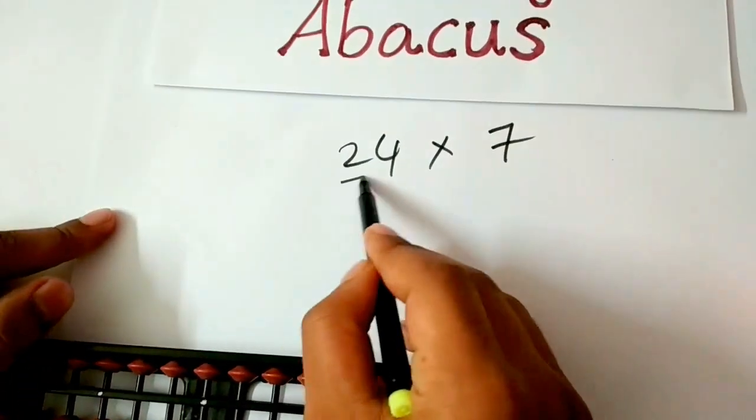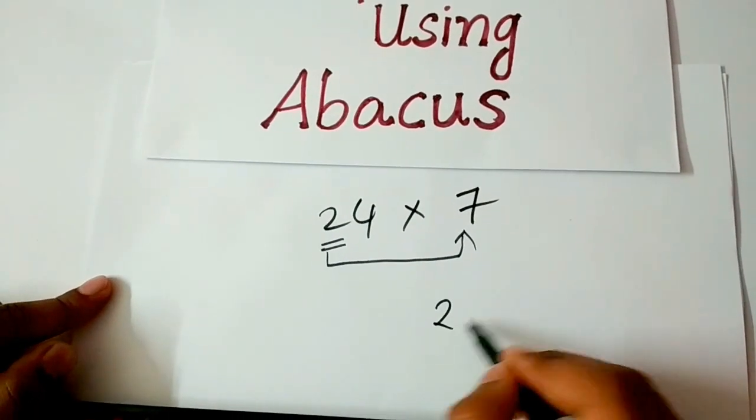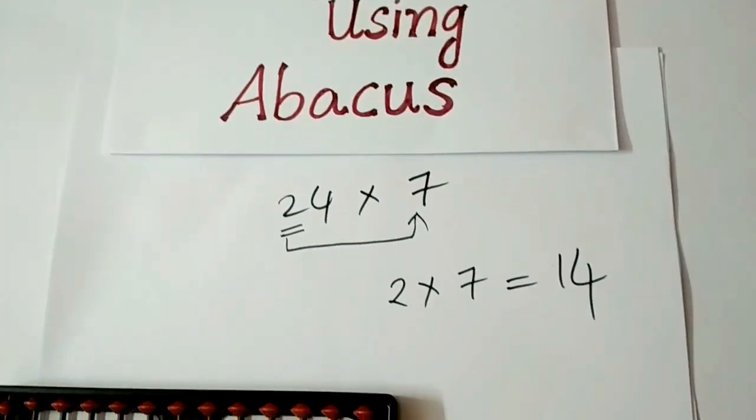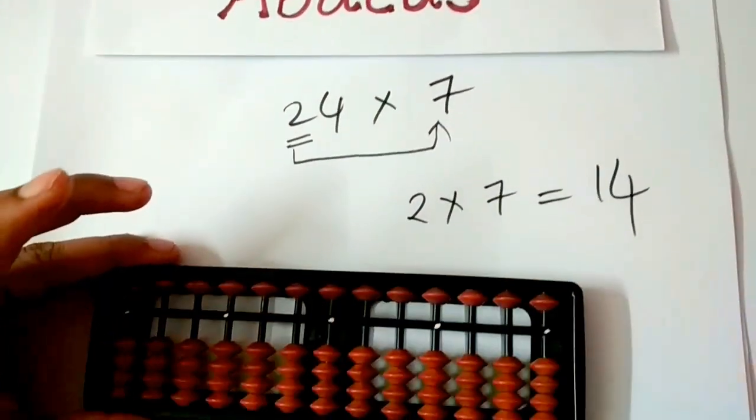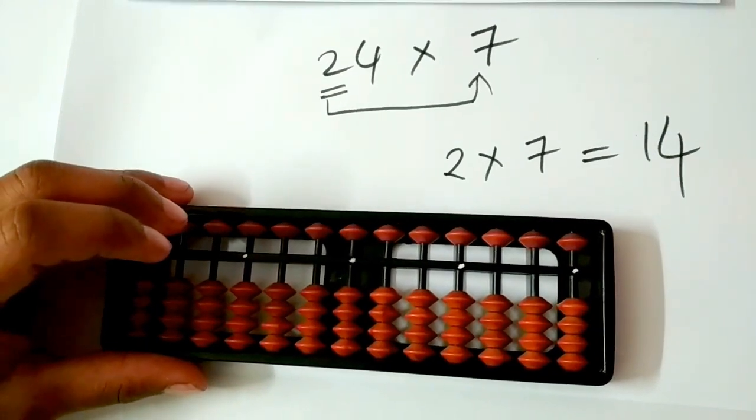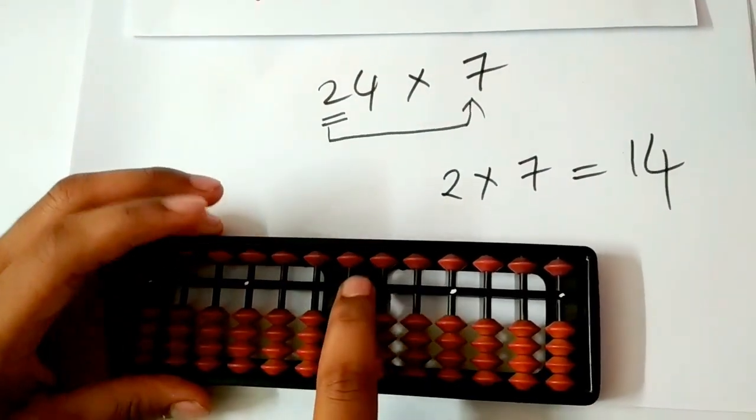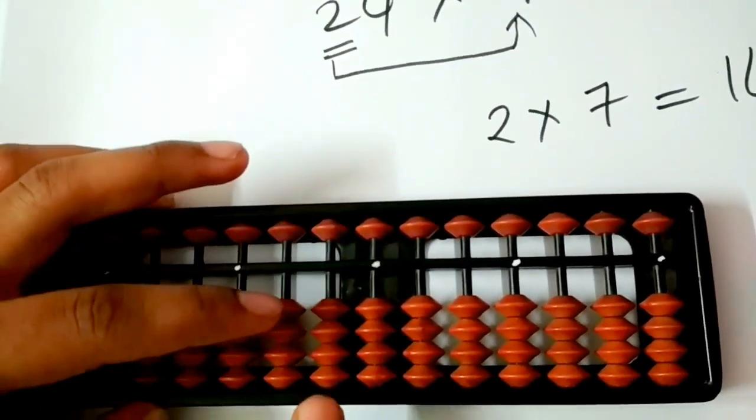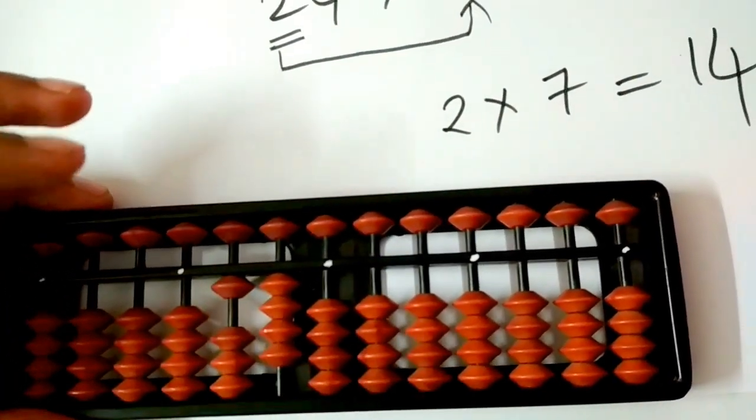First step is, multiply 2 and 7. 2 and 7 gives 14 as usual. We have to place 14 from the 100s rod. That is, this is units rod, this is tens rod, this is hundreds rod. 14 is 1 and 4. This is 14 from hundreds rod.